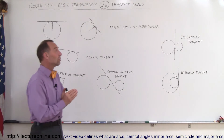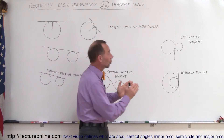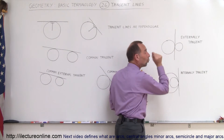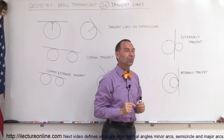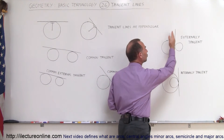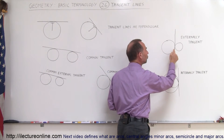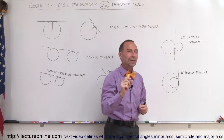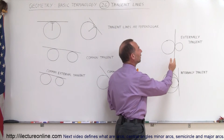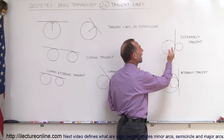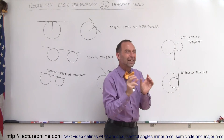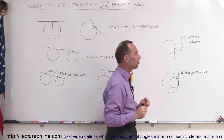We can have a situation where the two circles are side by side like this, where they touch at one single location, and then if we draw a line that runs between the two circles and also touches both circles at the same time at that very same point, that is then called an externally tangent situation. In other words, the circles are externally tangent.